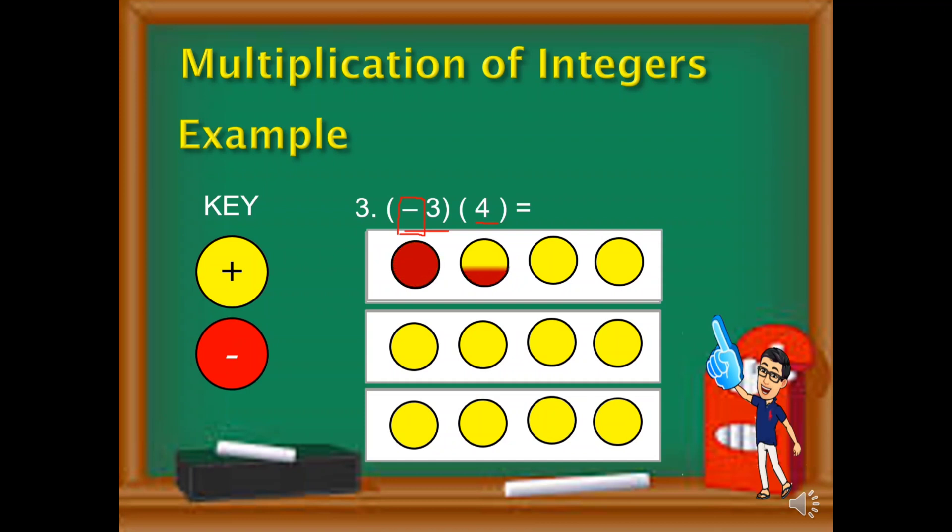So 1, 2, 3, 4, 5, 6, 7, 8, 9, 10, 11, 12. At yan ngayon yung naging itsura after we apply grouping, after nilagyan natin yung mga chips sa bawat group, after ginamit natin yung negative sign na reciprocal or opposite colors. So dahil siya yung color red na labingdalawa, negative 3 times 4 is negative 12.